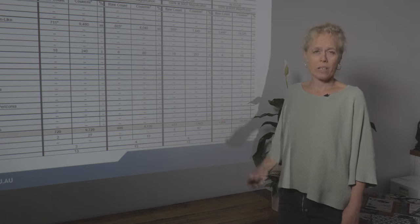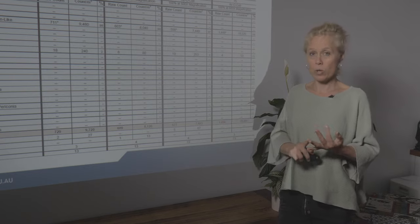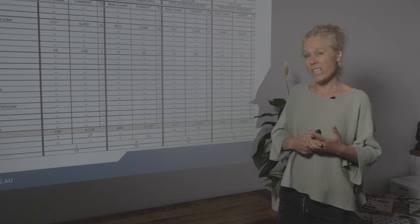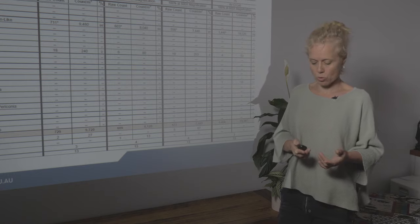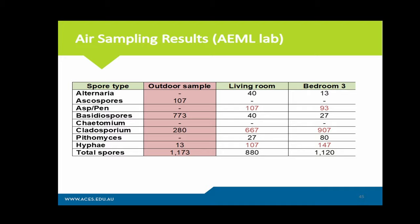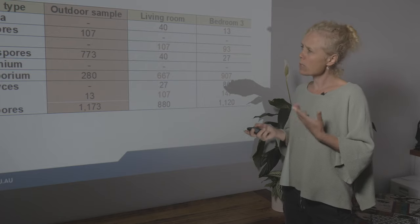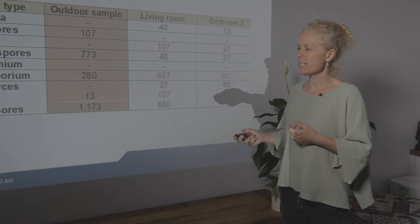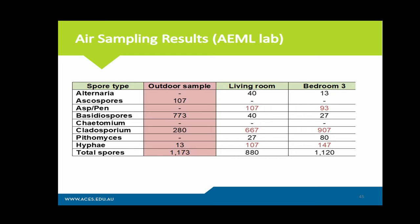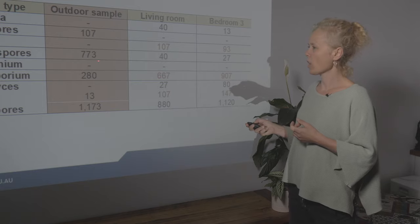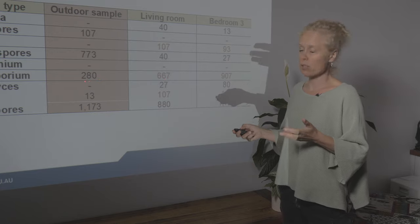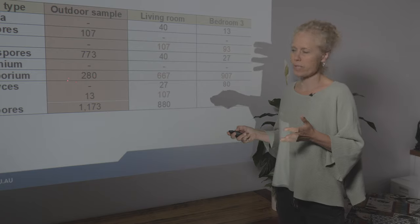On air samples you don't want to see speciation, you don't want to see any water damage moulds, and you don't want to see levels higher than the outdoor samples. Hyphae are really critical because they tell you if you're close to the actual growth. In your report, condense the lab results so the client can understand them — noting that Aspergillus and Penicillium were found indoors but not outdoors, and that Cladosporium was almost three times higher than the outdoor sample. That's a problem.